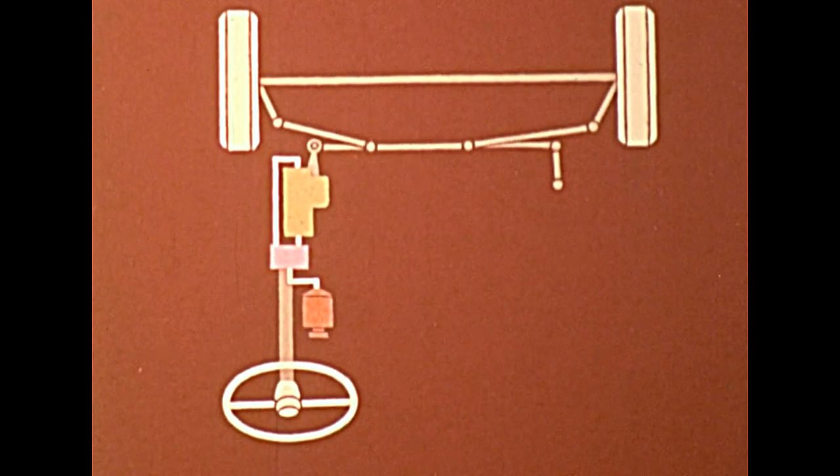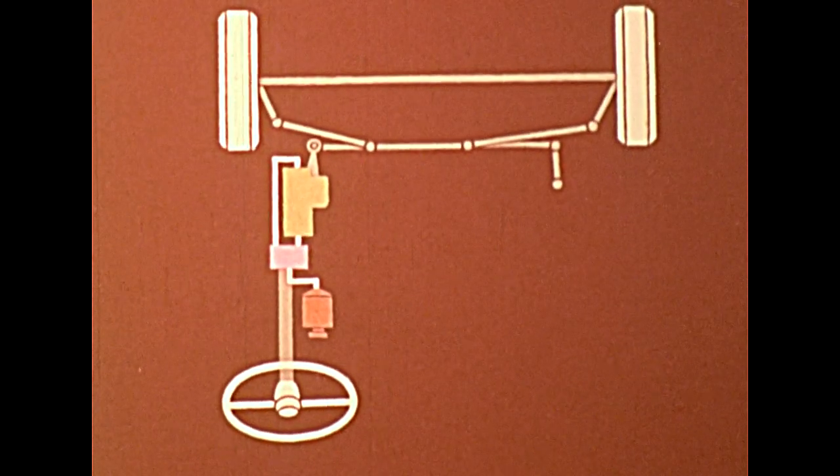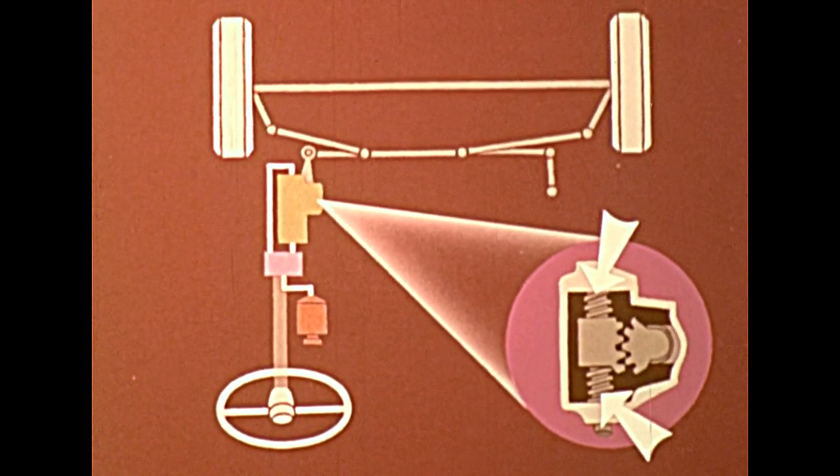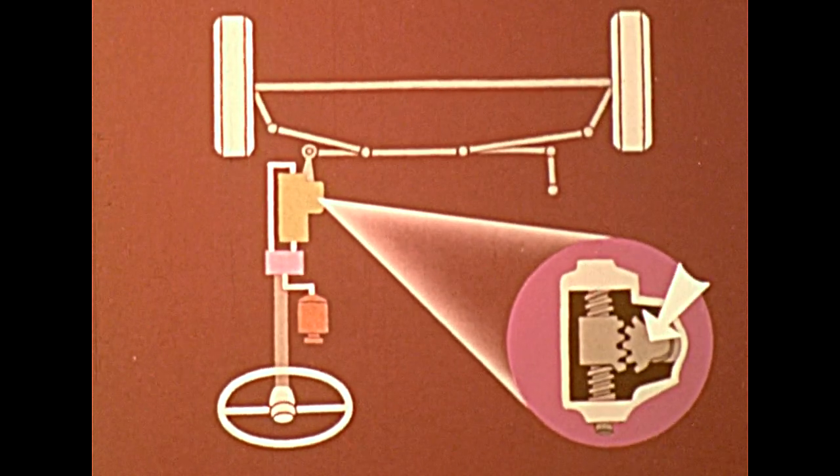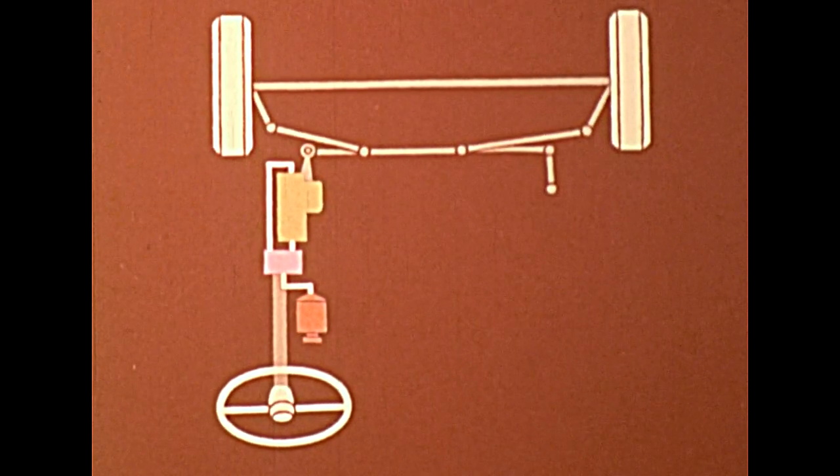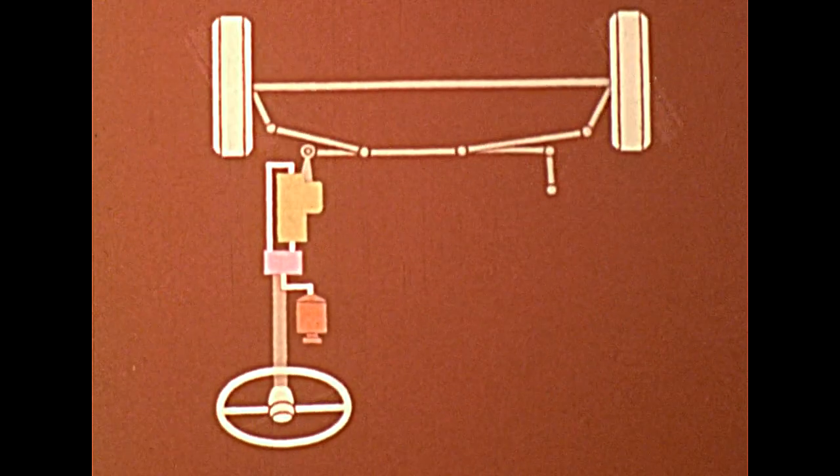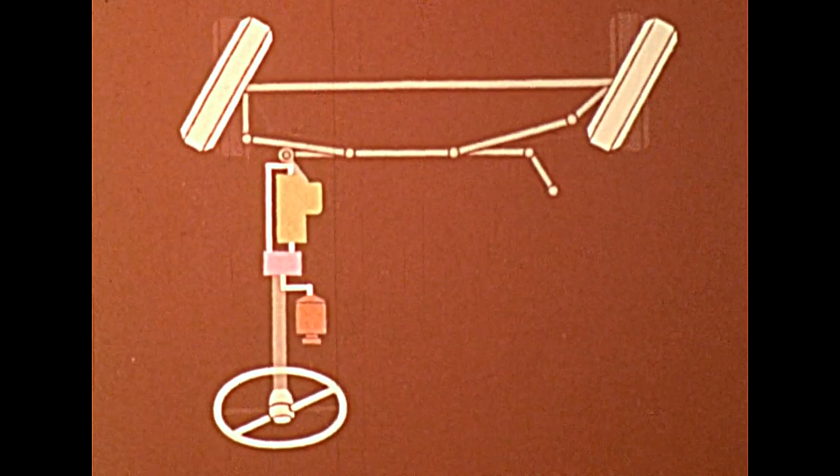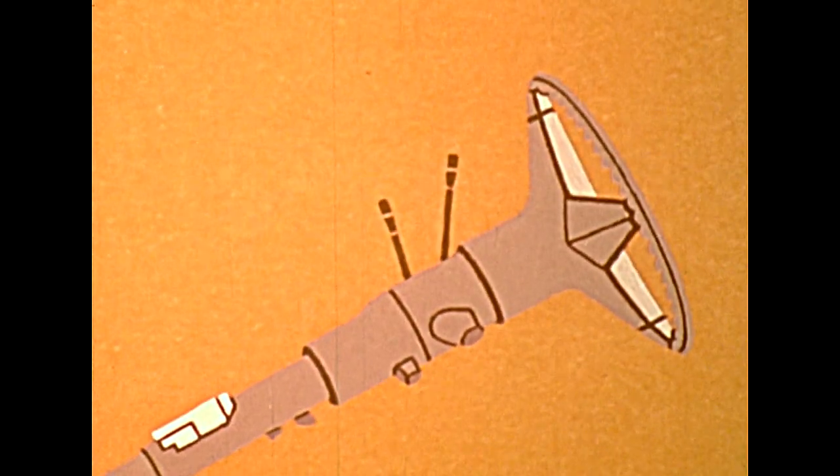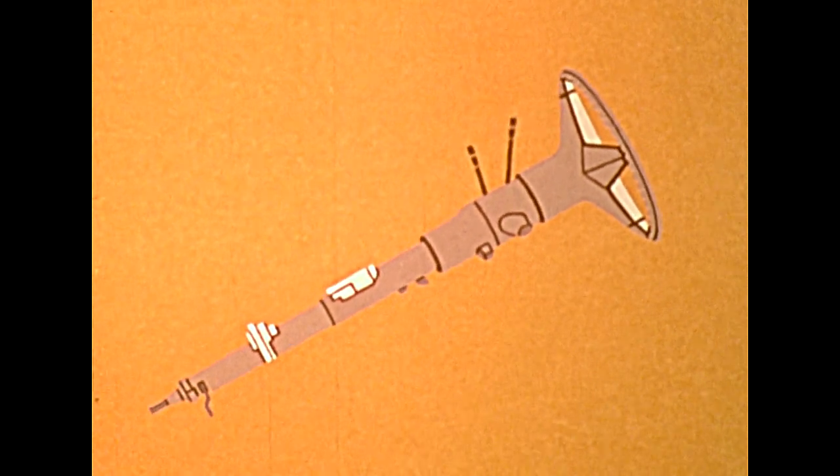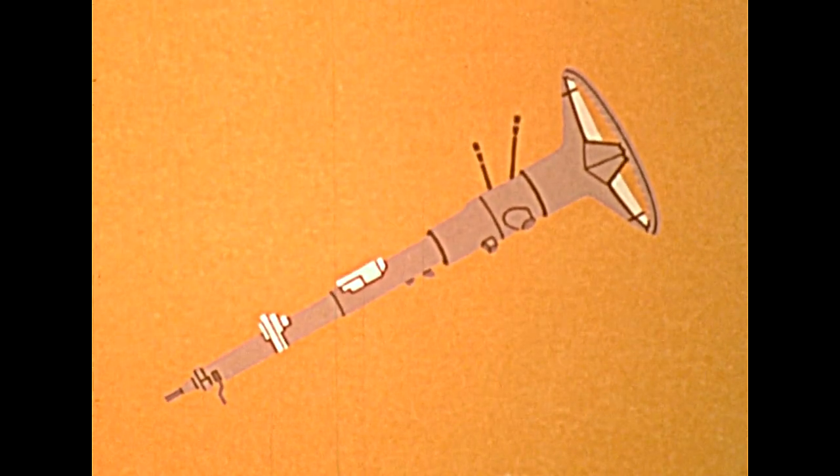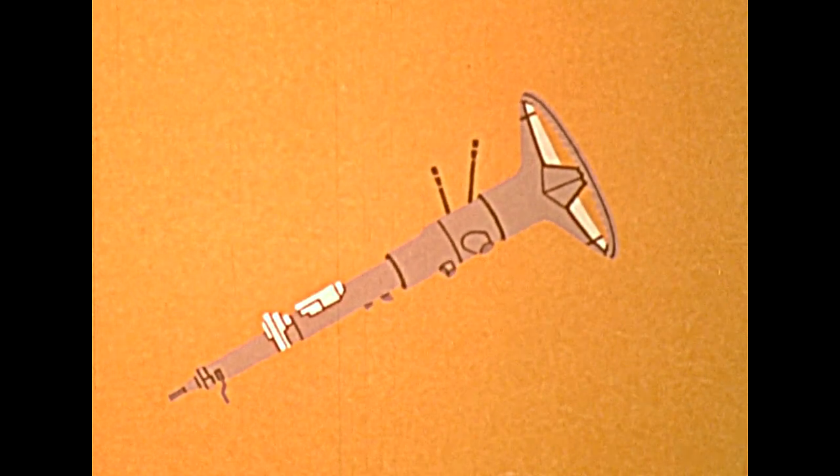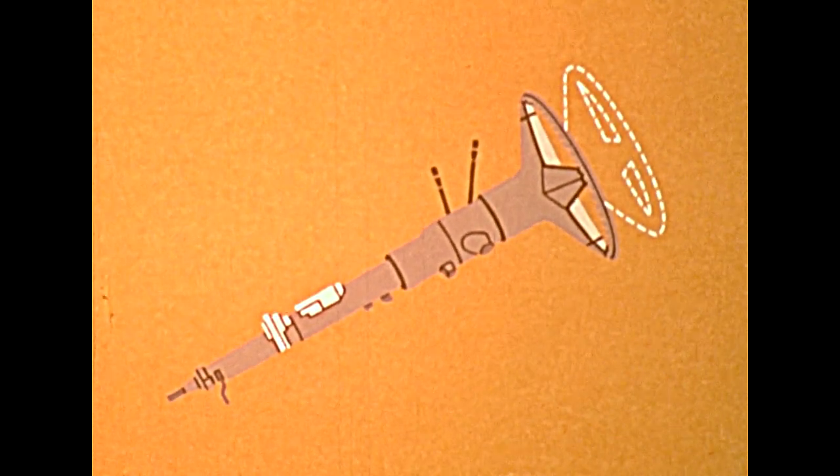In both power and non-power steering, the steering post or column turns a worm gear, which is engaged with the steering gear. Rods form a linkage to the wheels, which moves them in response to the turning of the steering wheel. Safety steering columns or posts were first introduced on GM's 1967 models. These columns are designed to telescope in a collision, greatly lessening the possibility of injury to the driver.